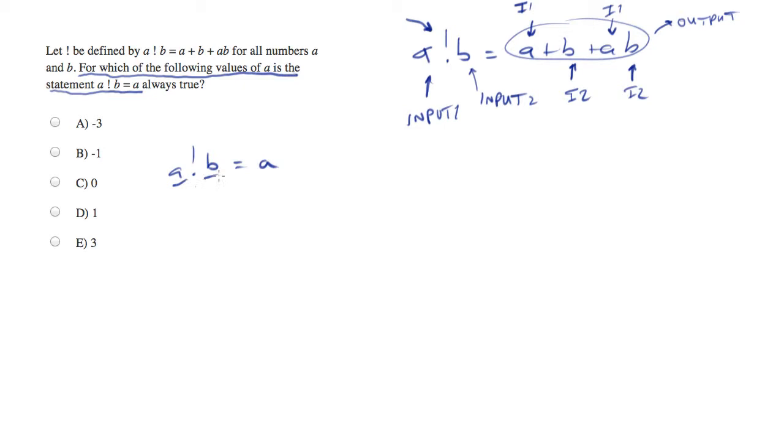My inputs are A and B. So everywhere that I have an A, I'm plugging in A. Everywhere that I have a B, I'm plugging in B, which means I'll just get what the function is. So I'm essentially going to have A plus B plus AB equals A.